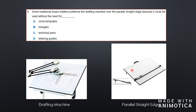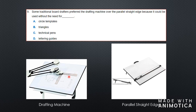Question nine: some traditional board drafters prefer the drafting machine over the parallel straight edge, because it could be used without the need for what? Looking at both drawings — the drafting machine and the parallel straight edge — the drafting machine is more adjustable. With the drafting machine you can draw straight lines, vertical lines, and also draw angles by swiveling the pad. With the parallel straight edge you cannot do vertical lines or angles — you need a set square for those. So drafters prefer the drafting machine because they won't need to use any triangles or set squares.